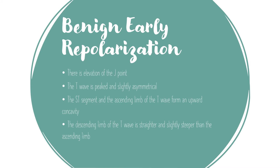This EKG shows benign early repolarization because there is an elevation of the J point — the end of the QRS complex. The T wave is peaked and slightly asymmetric, unlike hyperacute T waves which are more symmetrical. The ST segment and the ascending limb of the T wave form an upward concavity, and the descending limb of the T wave is straighter and slightly steeper than the ascending limb, making it asymmetric.